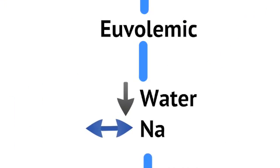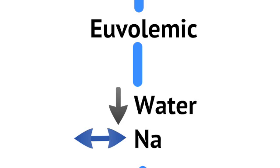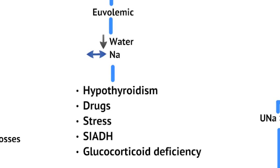For euvolemic hyponatremia, there's a general decrease in water or metabolic disturbances, while sodium content tends to remain about the same. Causes include hypothyroidism, drugs, stress — where a lot of cortisol is released — and SIADH, the syndrome of inappropriate antidiuretic hormone release. Examples of causative drugs include SSRIs, tricyclic antidepressants, and cancer drugs like vincristine or cyclophosphamide.